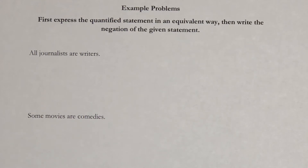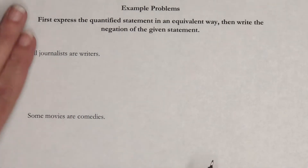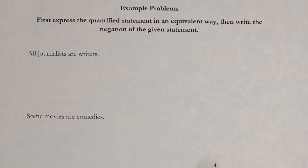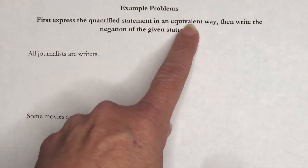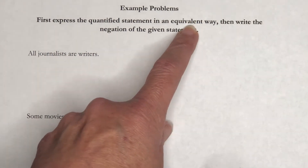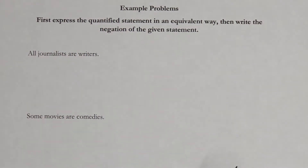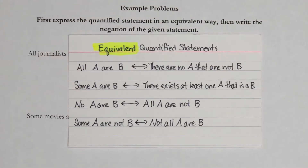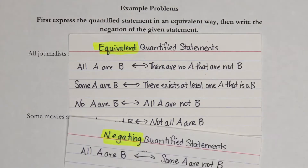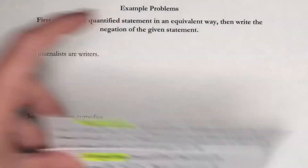This is part three of section 3.1. We are given several statements and we are asked to first write them in an equivalent way, and then write the negation of each one. Throughout this whole chapter, I'm going to be using index cards with information so that we can quickly reference it. The highlighting is just so that I can quickly pick up the correct card.